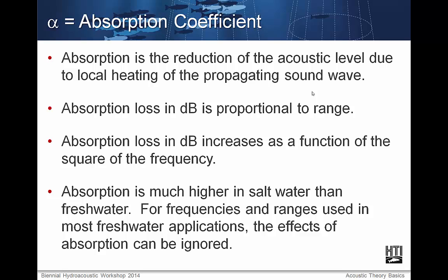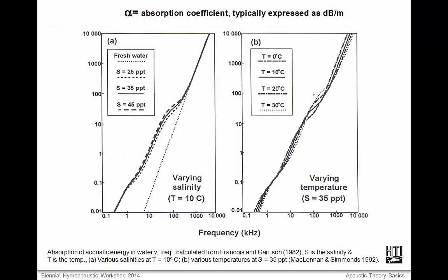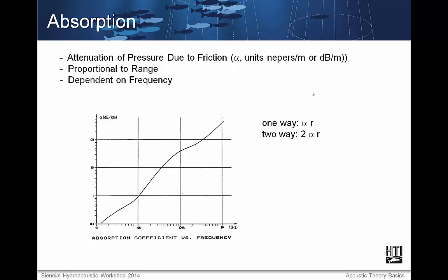There are a few other things that reduce an acoustical signal. First, absorption is the reduction of the acoustic level due to local heating in the propagating sound wave. Absorption loss in decibels is proportional to the range, and increases as a function of the square of the frequency. Absorption is much higher in salt water than fresh water. For frequencies and ranges used in most fresh water applications, the effects of absorption can be ignored. The mathematical model for one-way absorption loss is the absorption coefficient times the range, and two-way absorption loss is the absorption coefficient times twice the range.